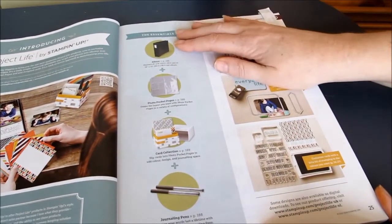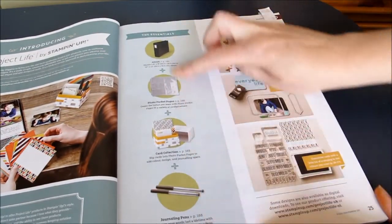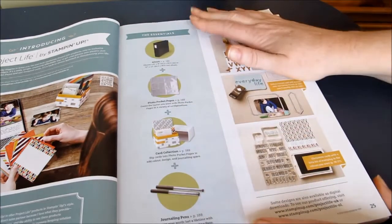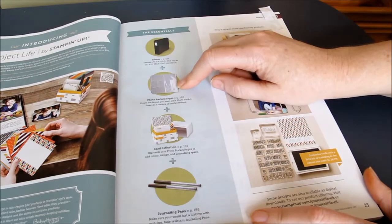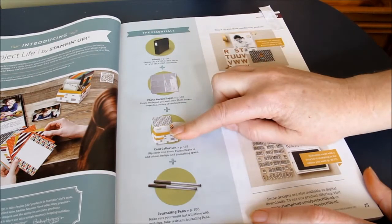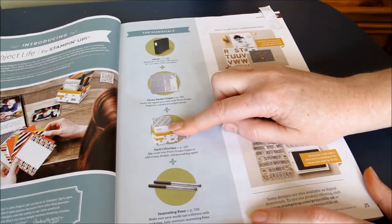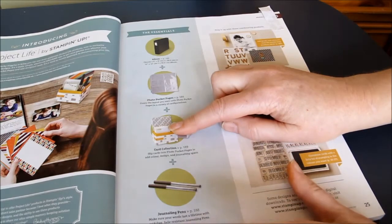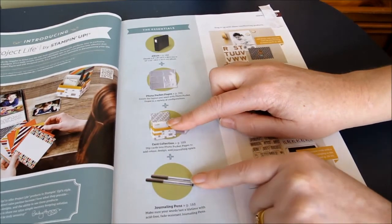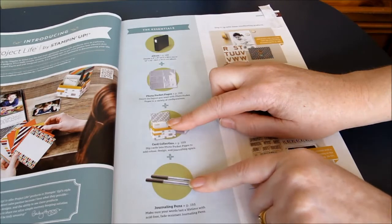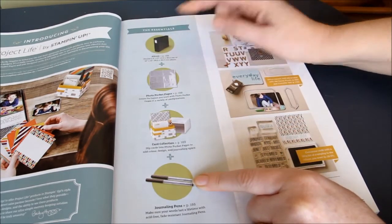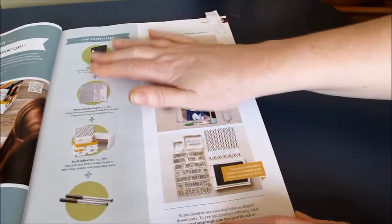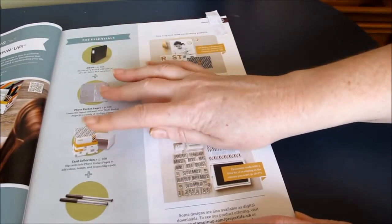We've got an essentials list here which is as essential as you want to make it. The project pages are definitely essential, they are part of it. The cards are also. Journaling pens, you may already have these that you can use but there's also journaling pens available. They will come in a pack of two so that's excellent. And the albums. They weren't available on pre-order the albums but I have got some of these items.